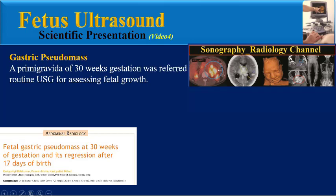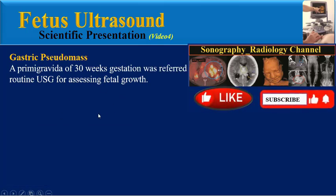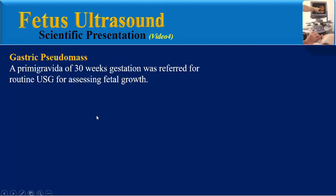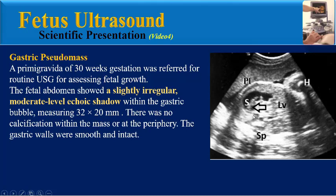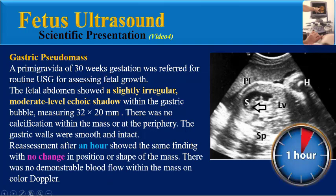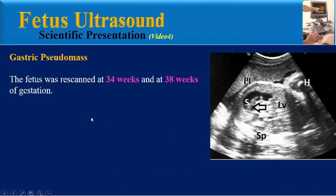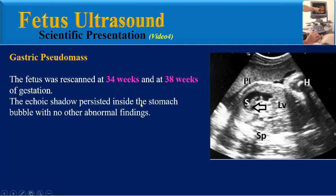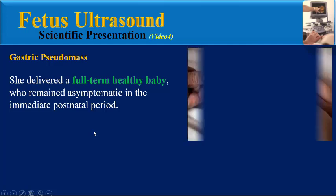A second teaching case: a primigravida of 30 weeks gestation was referred for routine ultrasound for assessing fetal growth. The fetal abdomen showed a slightly irregular moderate echoic shadow within the gastric bubble. There was no calcification within the mass or at the periphery. The gastric walls were smooth and intact. Re-assessment after one hour showed the same finding with no change in position or shape of the mass. There was no demonstrable blood flow on color Doppler ultrasound. The fetus was re-scanned at 34 and 38 weeks of gestation, and the echoic shadow persisted inside the stomach bubble with no other abnormal findings.